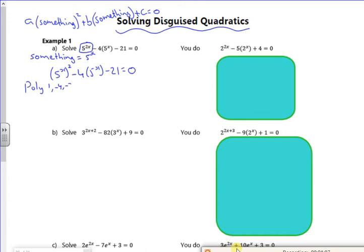So I can put 1, minus 4, minus 21, taking care to actually read the right answers, because in one of the, I think it might be in the second lesson, I wrote down the answers for the question above and just kept wittering on. So if I put that into poly, it gives me a minus 3 and it gives me a 7. Now normally we put x equals, but because it's a disguised quadratic, we put the something equals. So 5 to the power of x, 5 to the power of x.